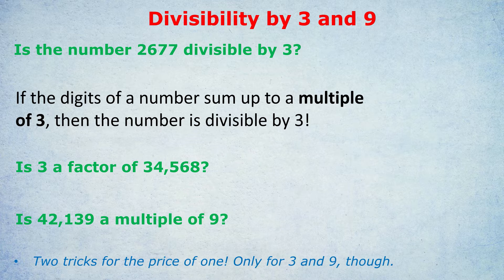Let's try the next one. Is 42,139 a multiple of 9? Exact same trick as with 3. Add up the digits and check if it's a multiple of 9. 4 plus 2 is 6, plus 1 is 9, plus 3 is 12, plus 9 is 21. So that number is not a multiple of 9, because 21 is not a multiple of 9.